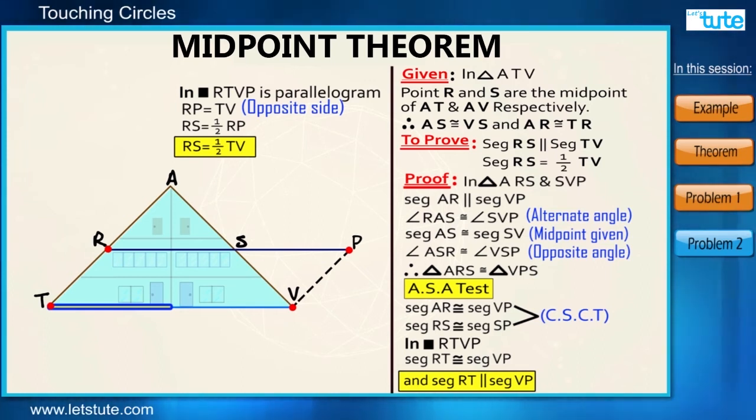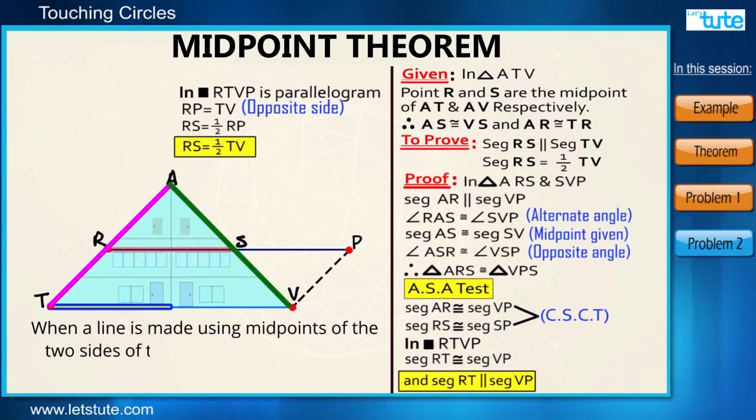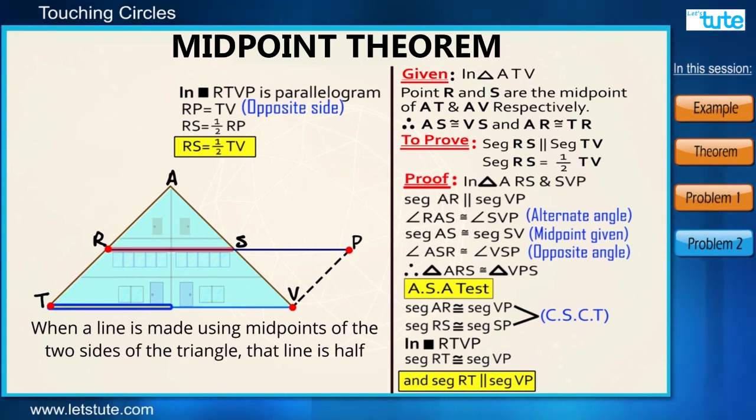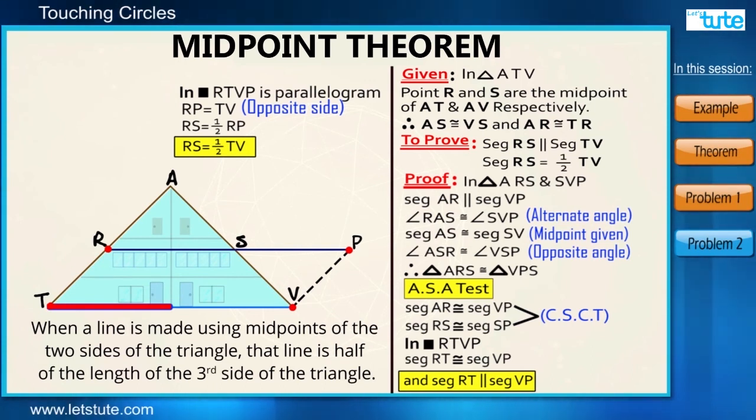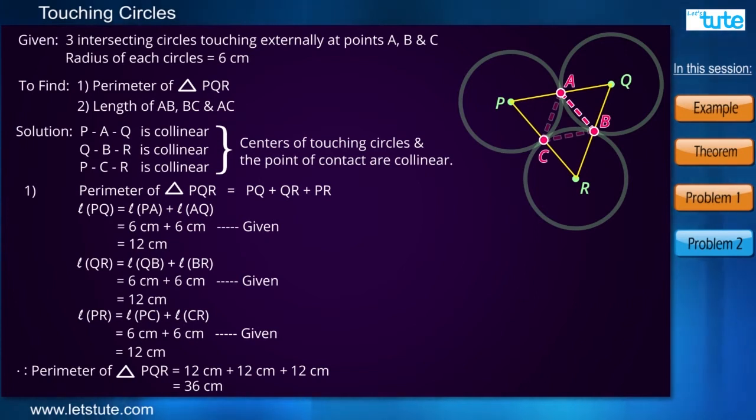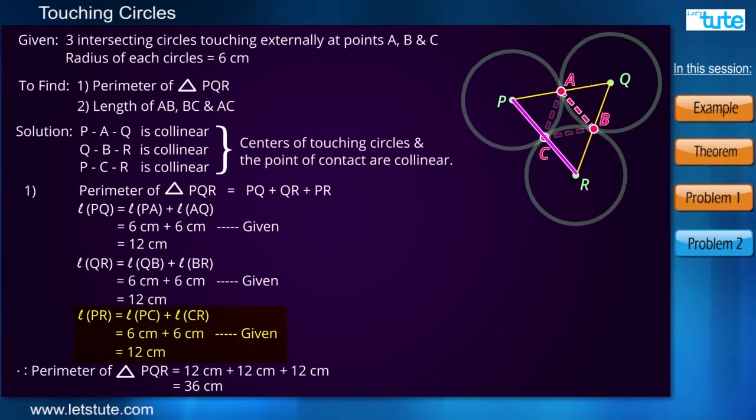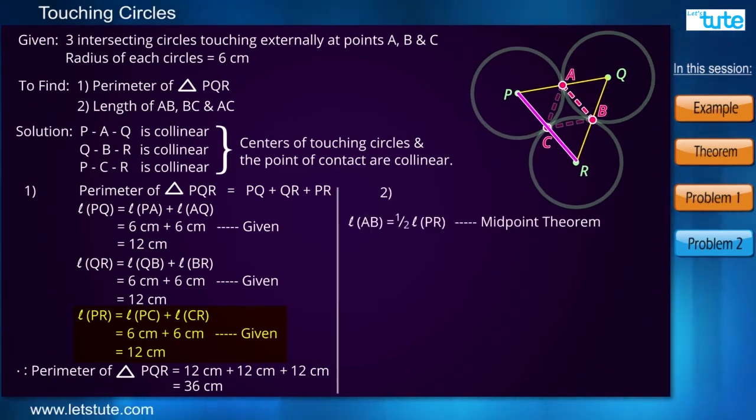It says that when a line is made using the midpoints of the two sides of the triangle, that line is half of the length of the third side of the triangle, correct? So in here, the measure of the third side that is PR is 12 cm. So the length of AB will be nothing but half of PR, that is 6 cm, correct?